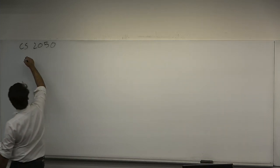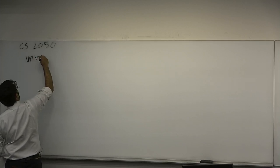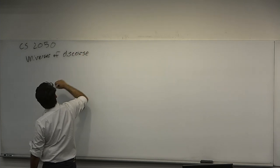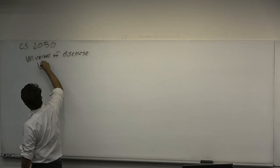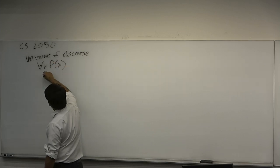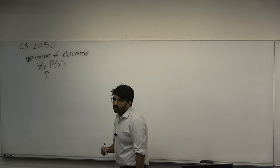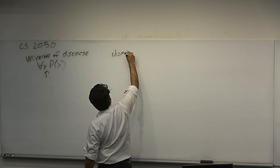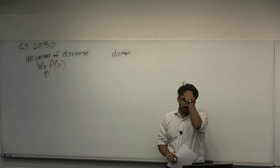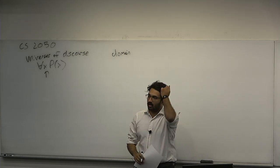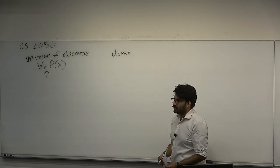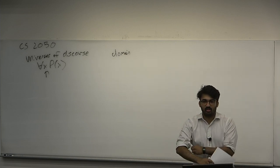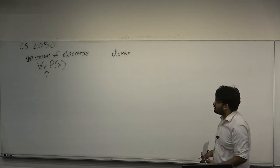The first thing we're going to talk about is universes of discourse. If you have some quantified statement 'for all x, P(x)', it's understood that x ranges over a universe of discourse — a domain. Even a function has a universe of discourse; it's a domain, and the range can also be a universe of discourse. It's a set of objects under discussion; it's the context of the statements.